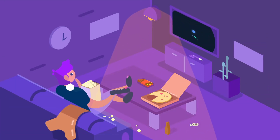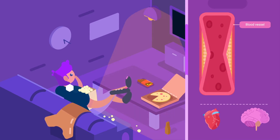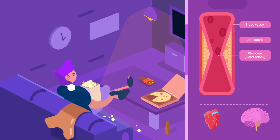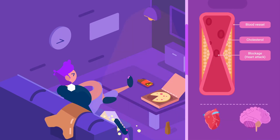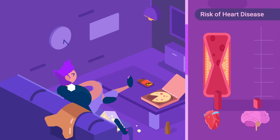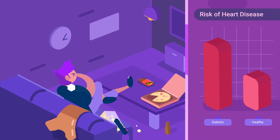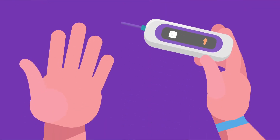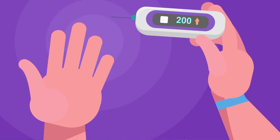Poorly controlled diabetes causes cholesterol to build up in the arteries and can obstruct the flow of blood to the tissues, which in turn causes artery obstructions mainly in the heart and brain. Patients with poorly controlled diabetes have almost twice the risk of heart attack or stroke than a person without diabetes. To avoid these complications it is very important to maintain adequate control of blood glucose and follow the recommendations of your care team.